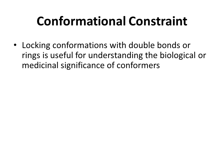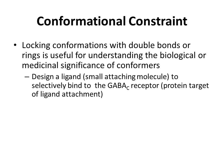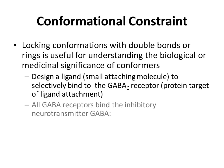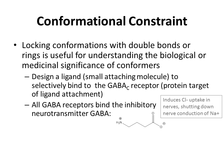Locking conformations with double bonds or rings is useful for understanding the biological or medicinal significance of conformers. For example, we might want to design a ligand, which is a small attaching molecule, to selectively bind to the GABA-C receptor, which is a protein target of ligand attachment. All GABA receptors bind the inhibitory neurotransmitter GABA, which increases the chloride uptake in nerves, blocking nerve conduction.